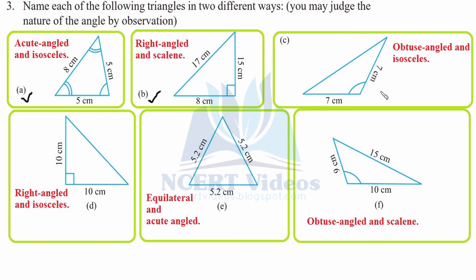Part c: One angle is clearly greater than 90 degrees and less than 180 degrees, therefore it is obtuse angled. Two sides are equal, so it is isosceles. Whenever two sides are equal, it always means two angles are also equal. Part d has a square box indicating right angle, and two sides equal to 10 centimeter each, so it is right angled and isosceles.